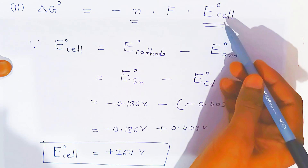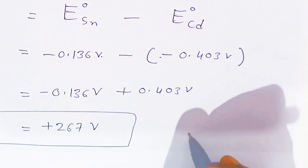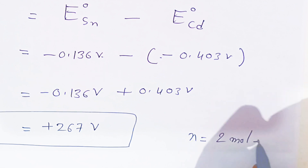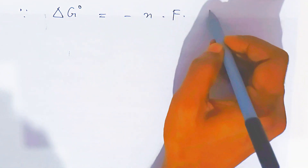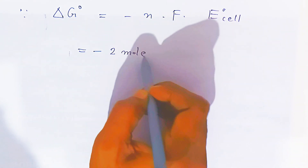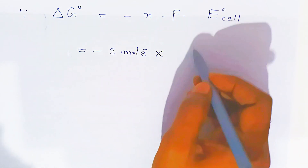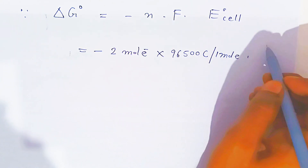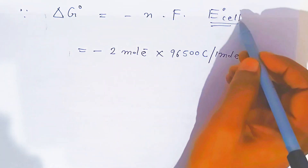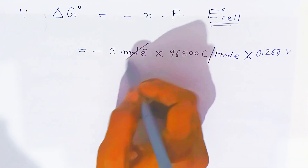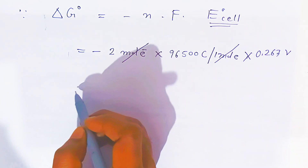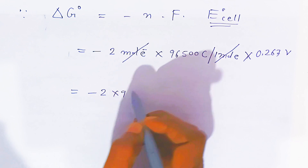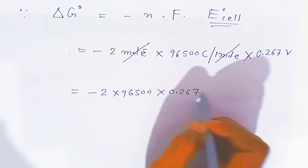Now putting the values into the formula: n equals 2 moles of electrons, Faraday's constant F equals 96500 coulombs per mole, and E°cell equals 0.267 volt. So delta G° equals minus 2 mol times 96500 coulombs/mol times 0.267 volt. The mole units cancel, and we need to multiply these three quantities.